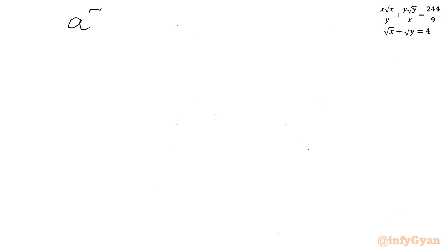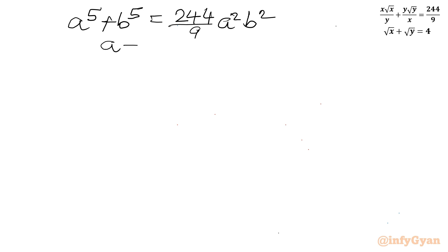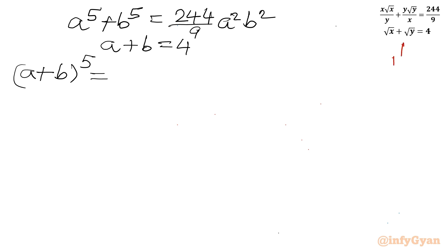To solve this system, I will write the expansion of (a + b)⁵. To find the coefficients, I will use Pascal's triangle. For power 2: 1 2 1; for power 3: 1 3 3 1; for power 4: 1 4 6 4 1; and for the required power 5: 1 5 10 10 5 1.